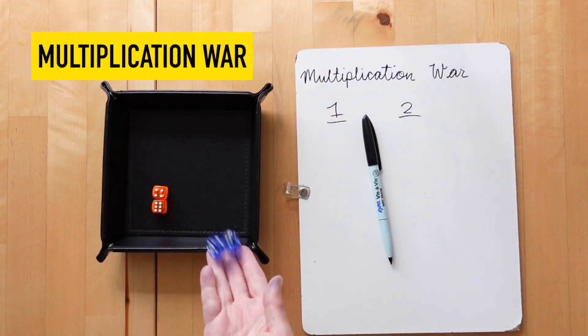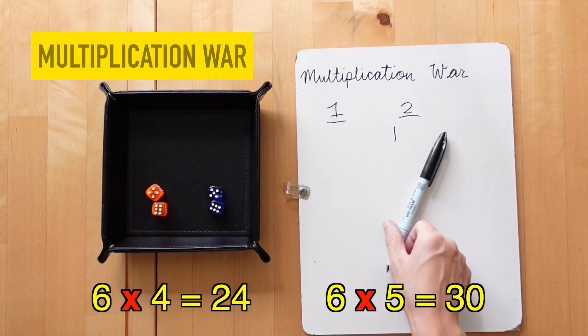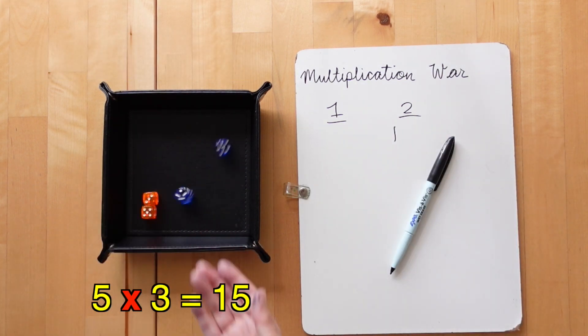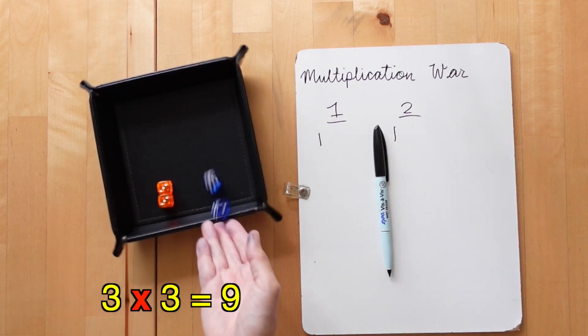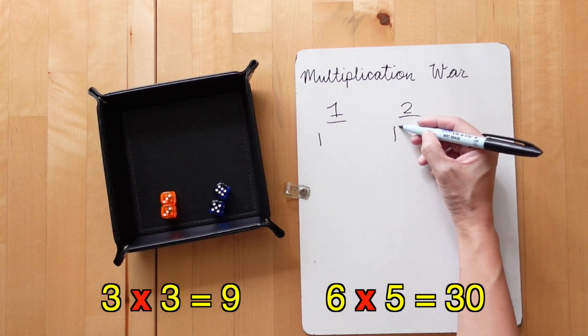The next step up would be Multiplication War. Again, with the two dice, you multiply both factors to get the product and the player with the largest product wins the round.